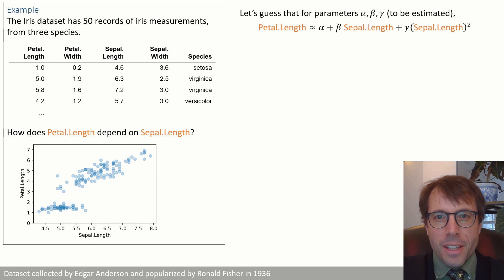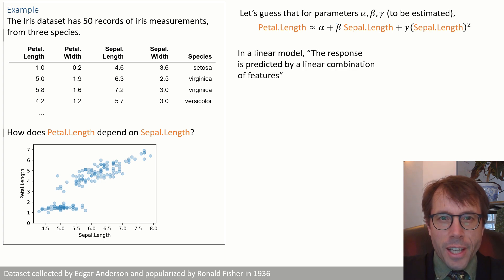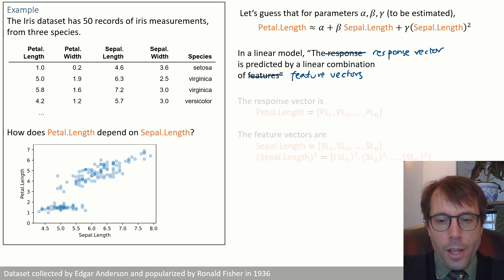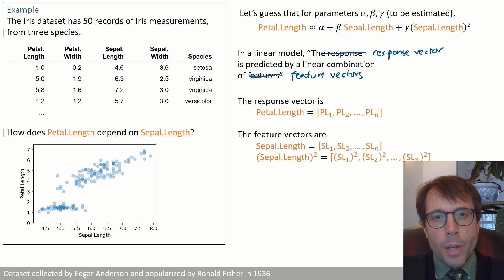I do indeed mean linear and this equation is linear in the following sense. The defining characteristic of a linear model is that the response is predicted by a linear combination of features. I want to clarify that definition slightly. I want to say the response vector is predicted by a linear combination of feature vectors.